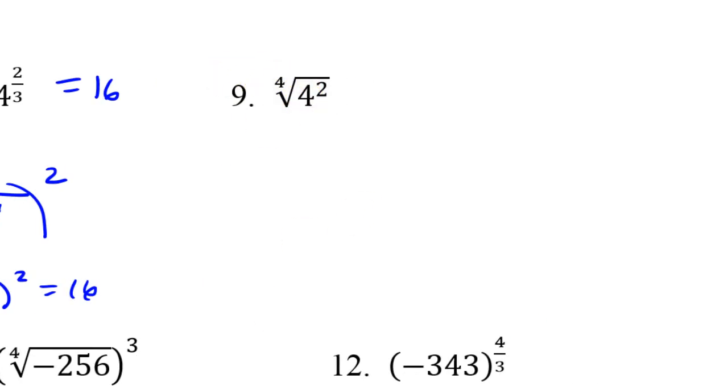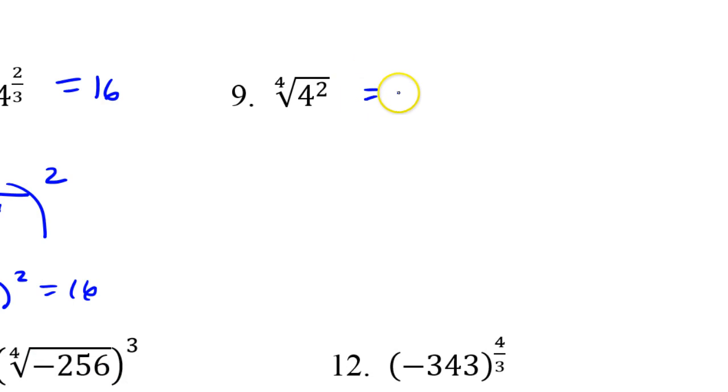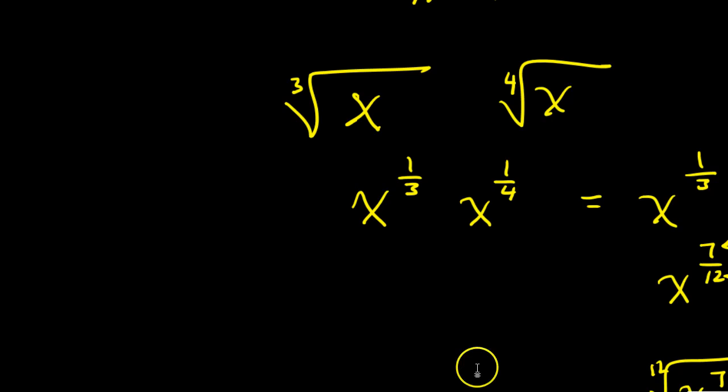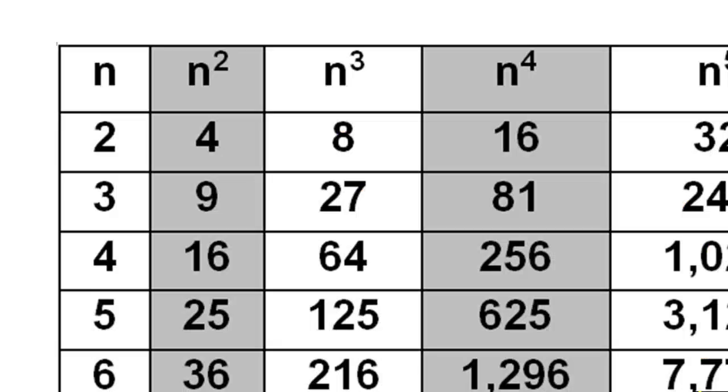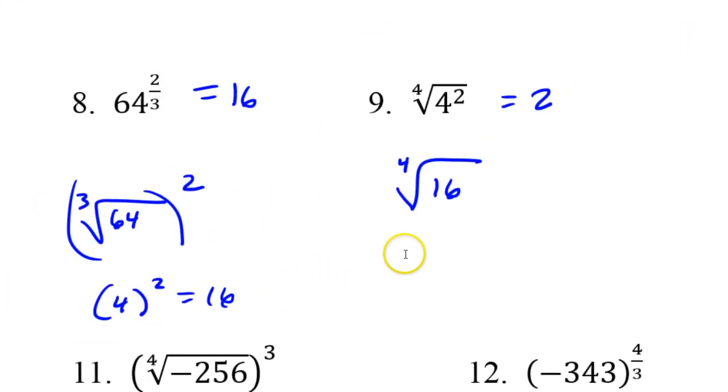How about this? So, 4th root of 4 squared. Remember, you type the 4 first, second caret, and now I can do 4 squared. That's 2. So, we know the answer is going to be 2. This is the 4th root of 16, because 4 squared is 16. And if you had one of these tables, the 4th root of 16 is 2.